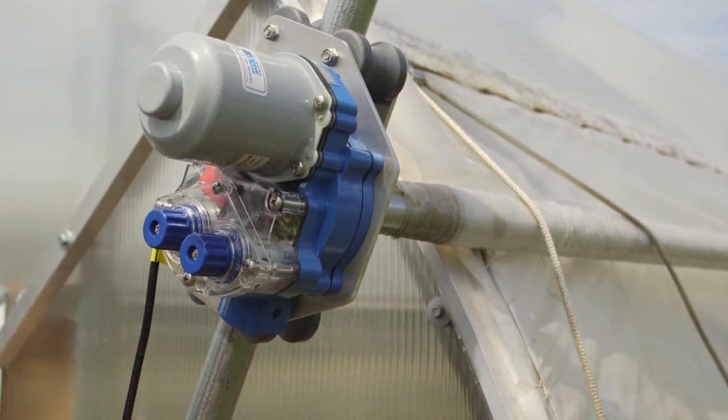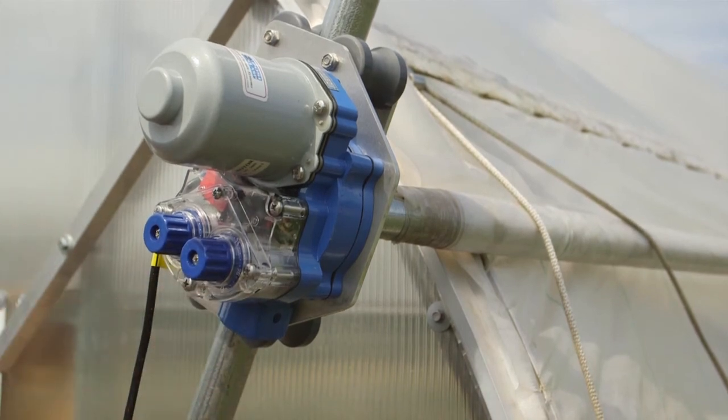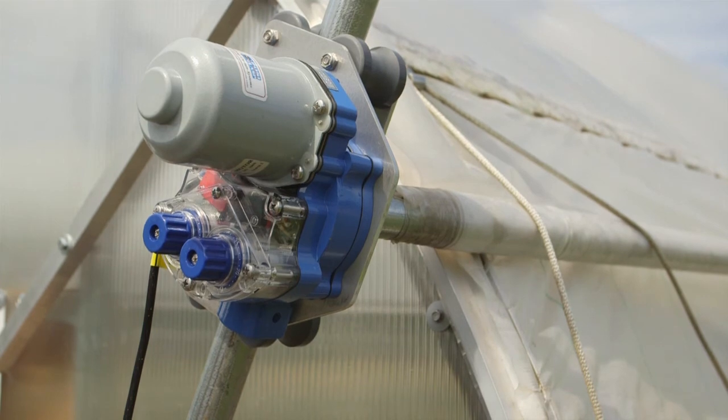What that allows is for you to get the maximum ventilation cross-flowing through your entire greenhouse. That is how you set a limit switch.